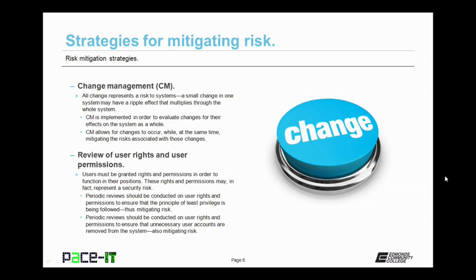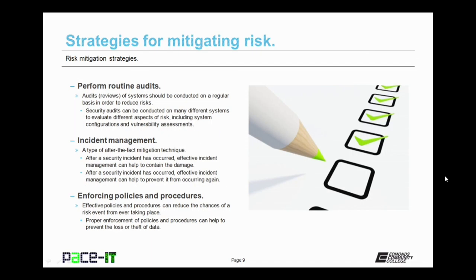Then there's review of user rights and user permissions. Users must be granted rights and permissions in order to function in their positions. These rights and permissions may, in fact, represent a security risk. Periodic reviews should be conducted on user rights and permissions to ensure that the principle of least privilege is being followed, thus mitigating risk. Periodic reviews should also be conducted to ensure that all unnecessary user accounts are removed from the system, also mitigating risk.